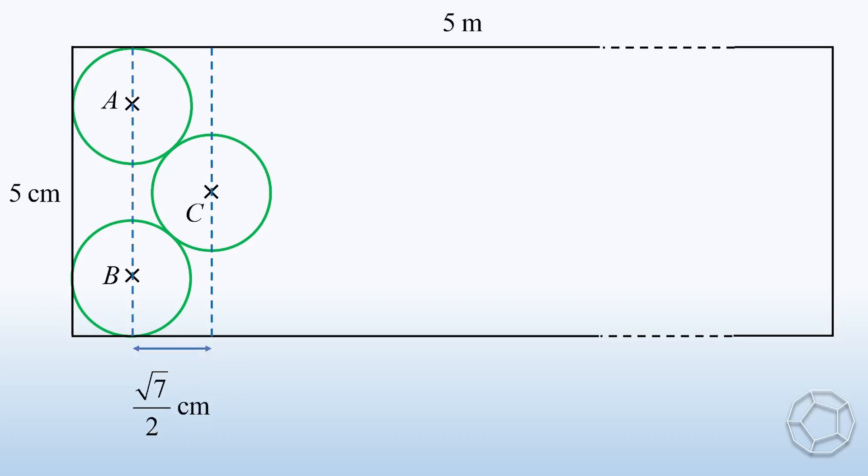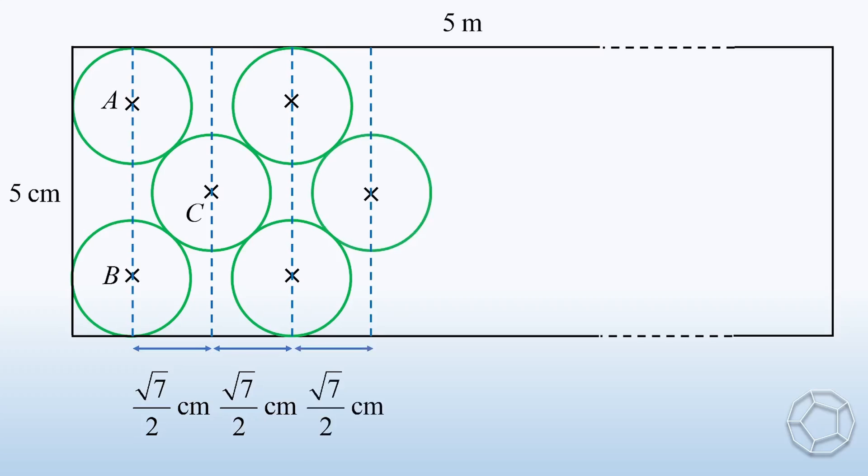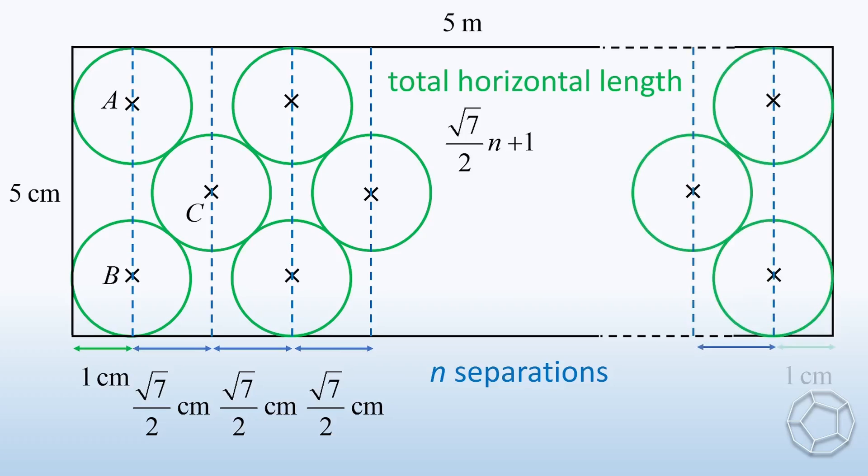Now, the problem is much easier to handle. We just have to figure out how many such separations are there. Suppose there are n of them. Let's write down the total horizontal length. For the separations, we have square root of 7 over 2 times n. On the left end, we have radius 1 cm. Likewise, on the right end, we have another radius 1 cm.